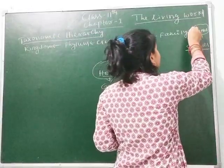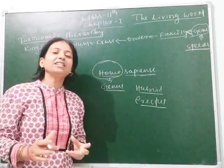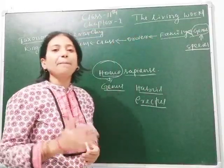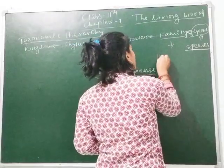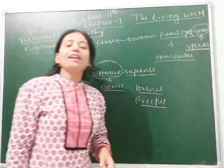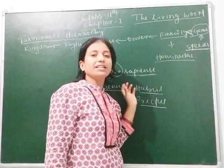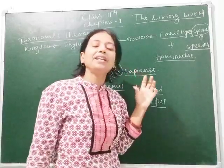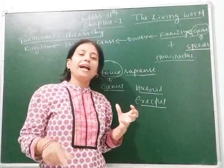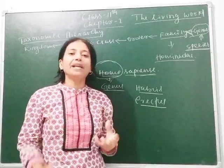Next we move to another taxa called family. Family is the group in which different genera are placed. We come under family Hominidae. Many genera like Homo erectus, Homo sapiens, and Homo habilis are kept in the same family Hominidae. Members of this family have the same physical structure, anatomical structure, are morphologically similar, and show similar behavior.